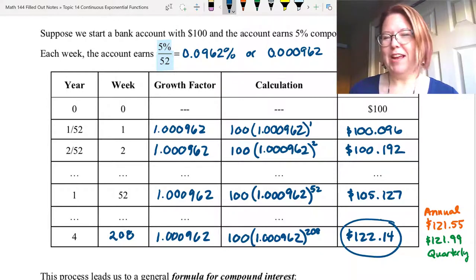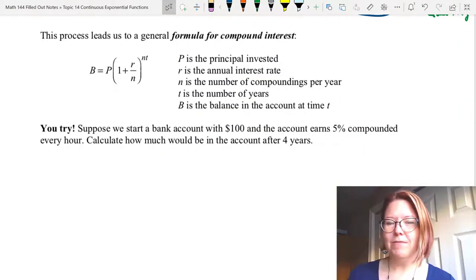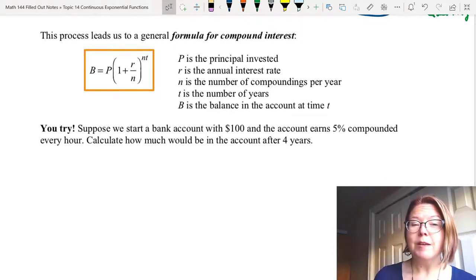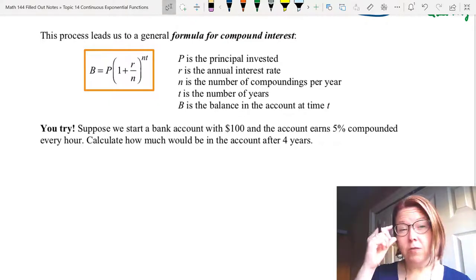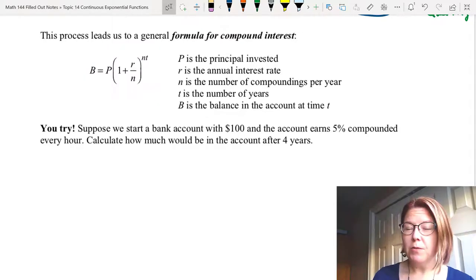Now hopefully you see a pattern forming here on how we do these calculations. We've done enough of them now. This process leads us to essentially a general formula for compound interest. And that formula is capital B equals capital P times (1 plus r over n), close the parentheses, and then raise that to the n times t power, lowercase n and lowercase t. Now let me go through each of these variables.